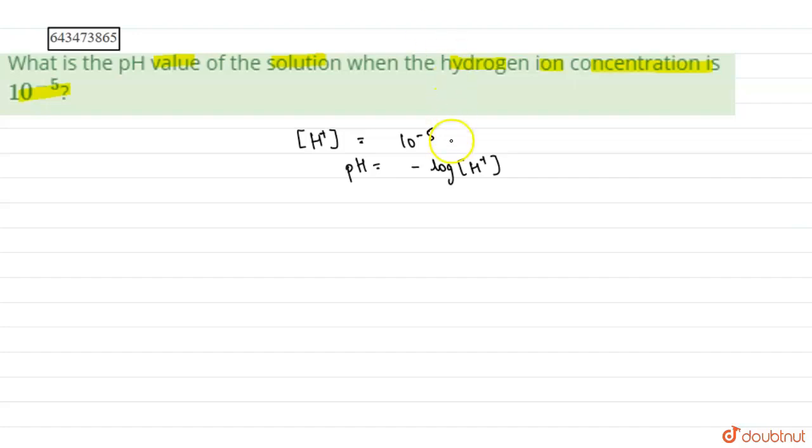As given in the question, H+ concentration is 10 to the power minus 5.